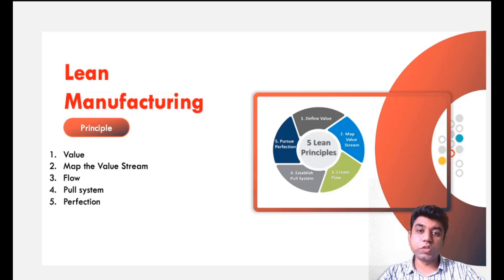The third thing is flow creation. For that, create a proper flow. The fourth thing is establish a pull system. What is pull system? It is a Kanban system that we had already discussed in our earlier classes. And the fifth one is go for the perfection. Everything should be perfect and properly planned.